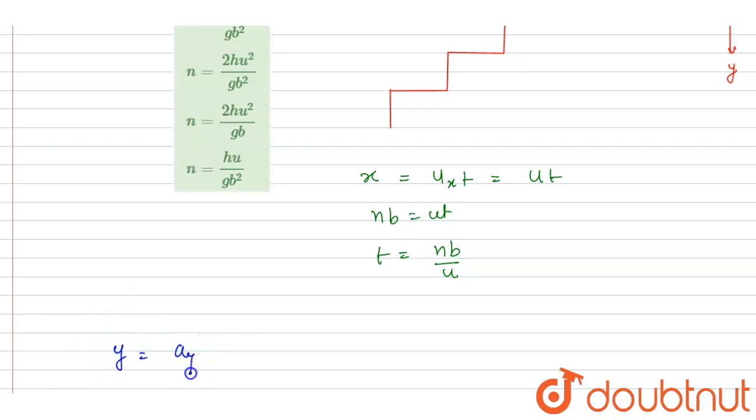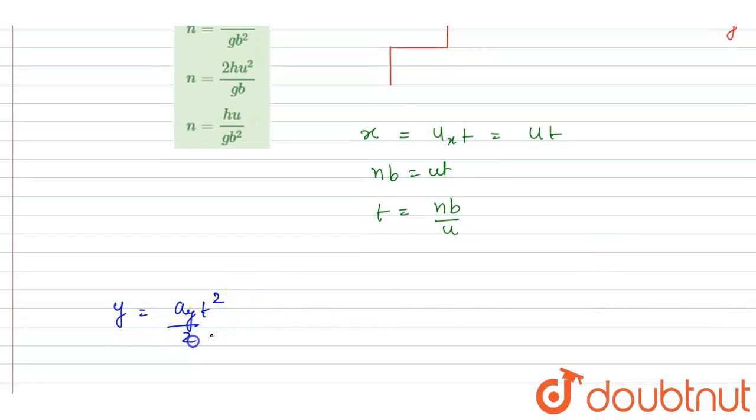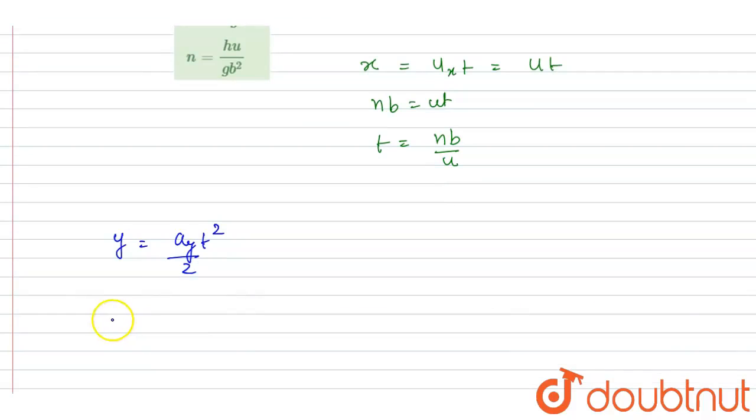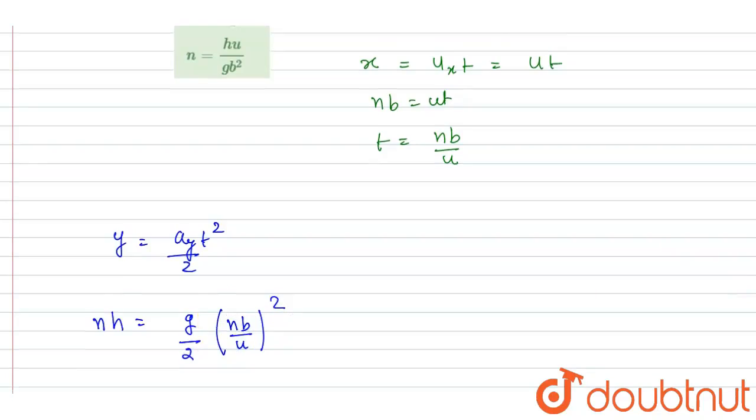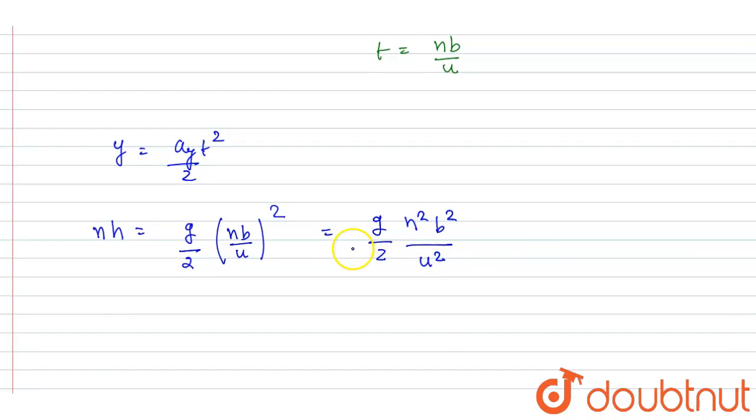equals at² by 2. Initial velocity is 0, so displacement in y direction, we already have seen, it is nh. Acceleration is g and time is nb by u, so square it. Now if you square it, you will write g by 2, n²b² by u², right? So from